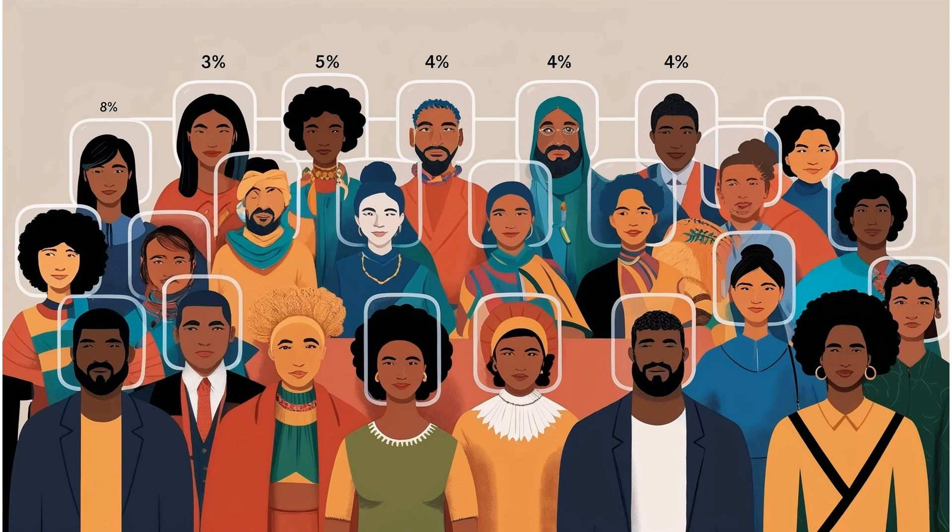Once these groups are defined, participants are then randomly selected from each stratum. This approach allows researchers to ensure that the sample mirrors the proportions of these subgroups in the overall population, leading to more precise and reliable findings.